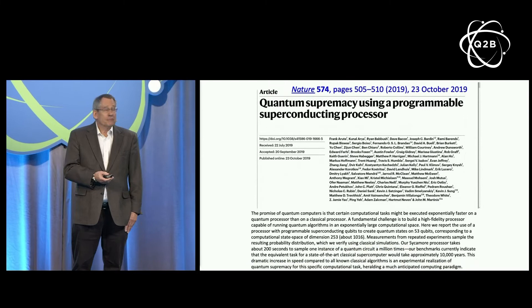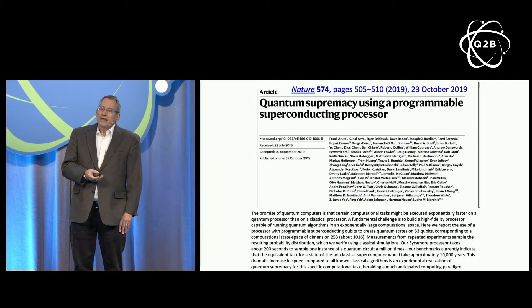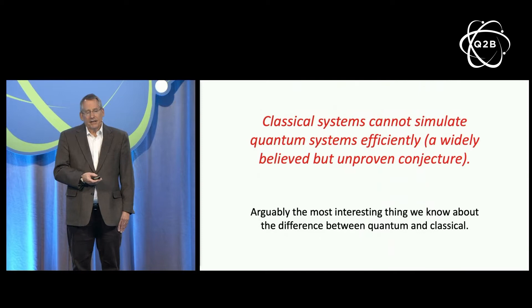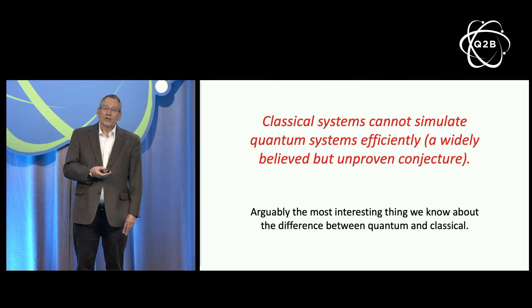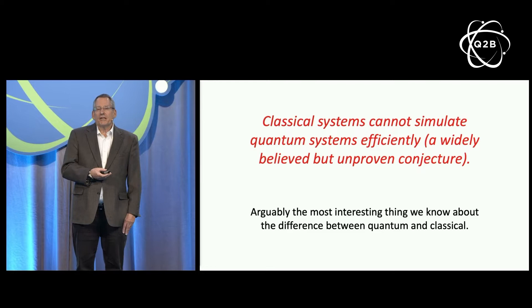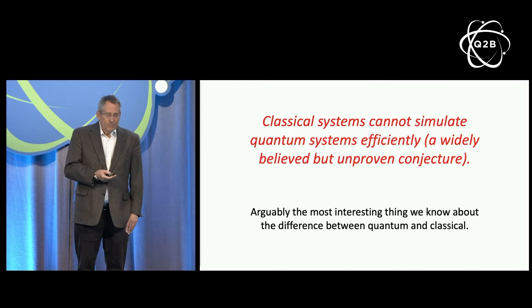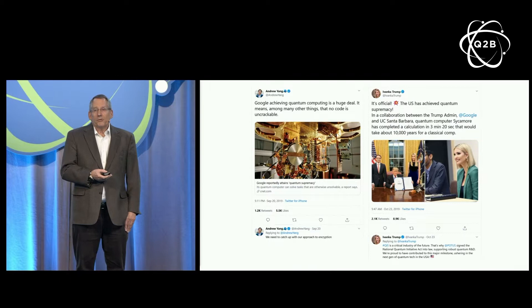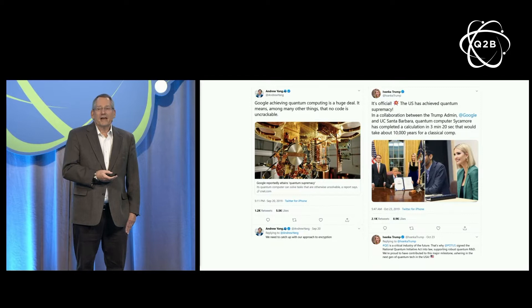You might have heard about this paper, which was published seven weeks ago. The idea of quantum supremacy is that we have good reason to think that it's not possible in all cases for classical systems to efficiently simulate what quantum systems do. Arguably that's about the most interesting thing that's ever been said about the difference between quantum and classical, so there's a strong incentive to verify in the laboratory that that's really true. The announcement of quantum supremacy stirred a lot of interest — far be it from me to make fun of anyone who has more Twitter followers than I do, but some of their reactions were more credible than others.